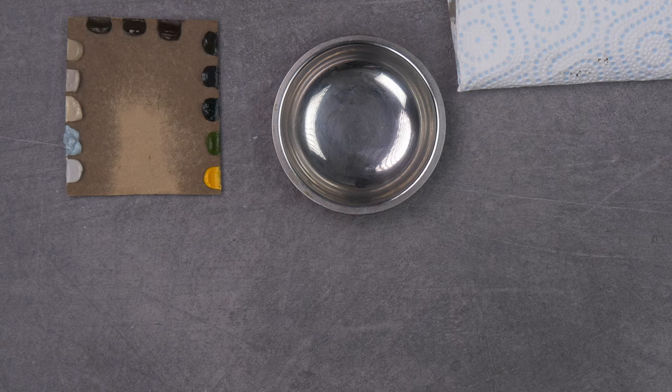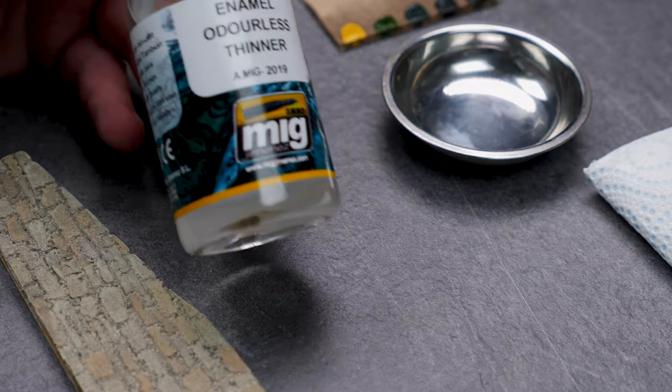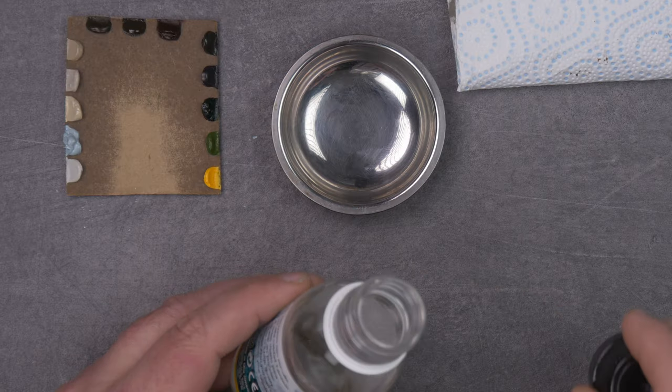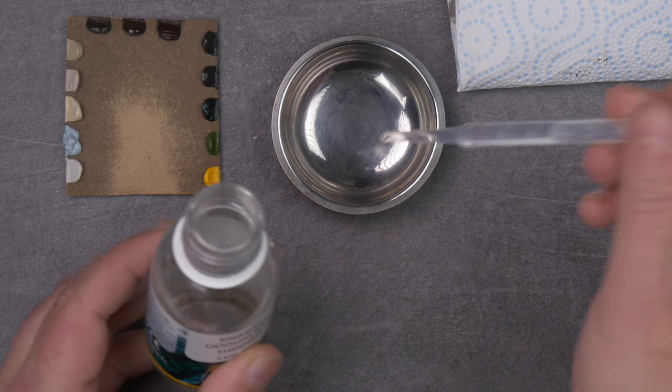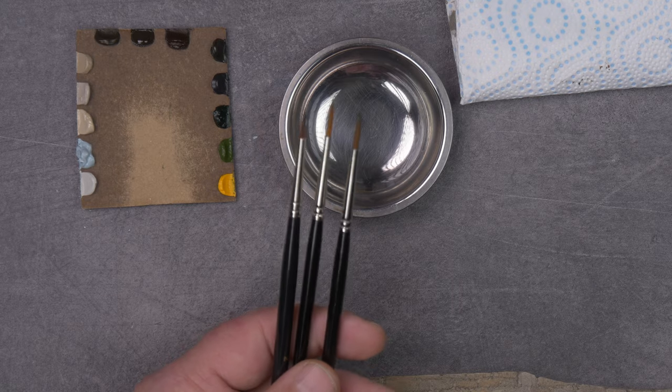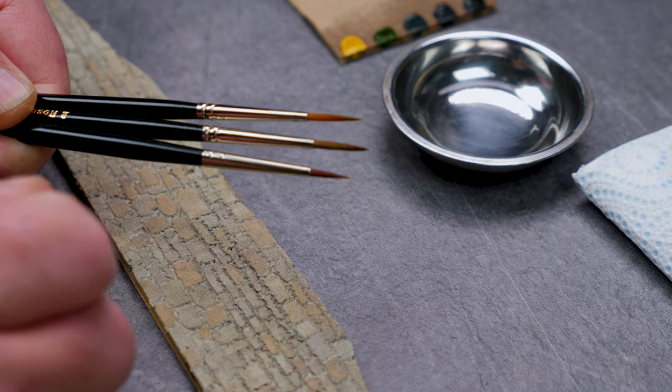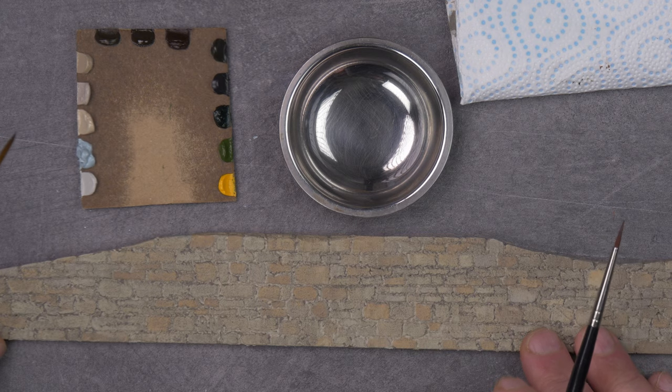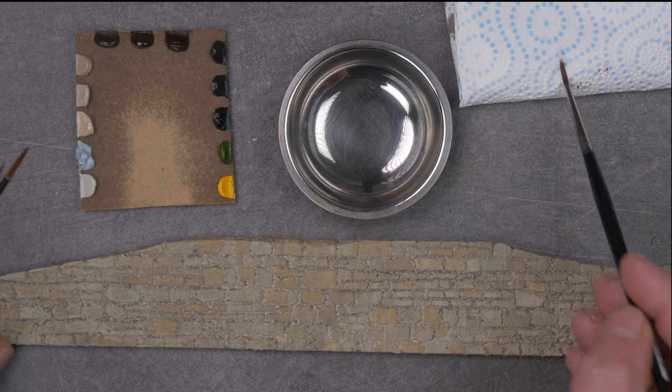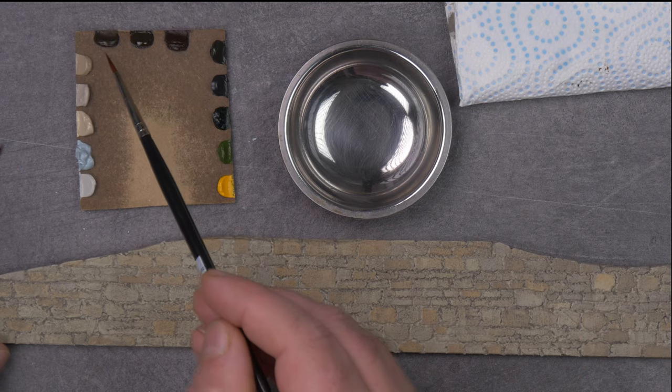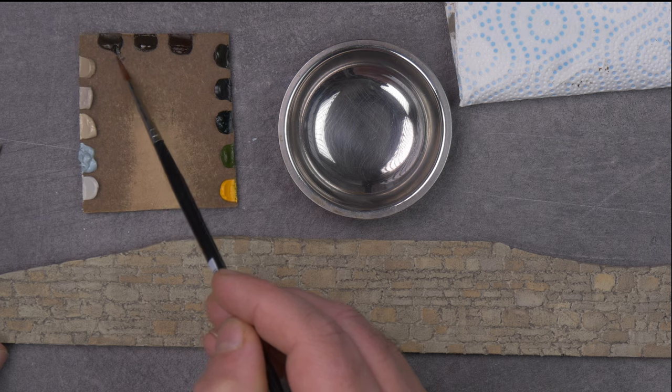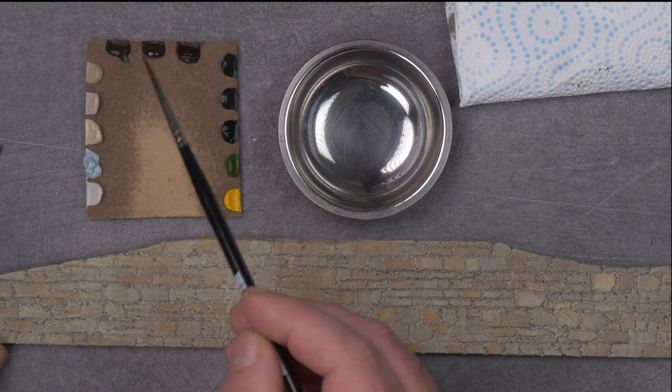Let it soak for a while so the linseed will soak into the card. Add a little bit of odorless thinner again. Then we start adding shadows. We take dark colors, moisten the brush a bit, and add a little bit of paint on the tip of the brush and start painting just like that.